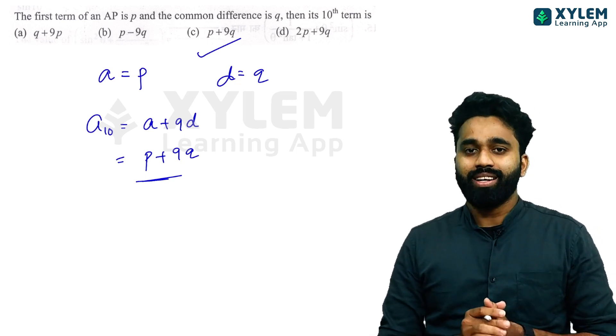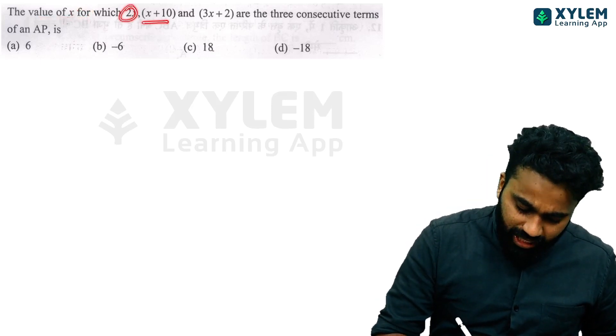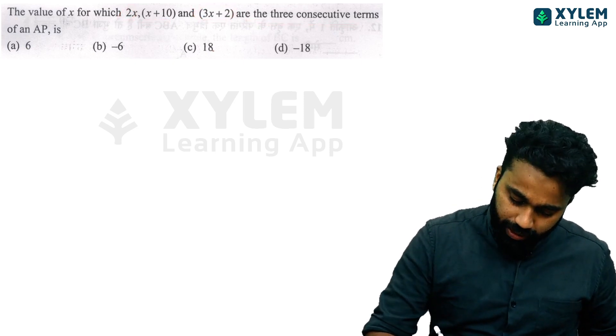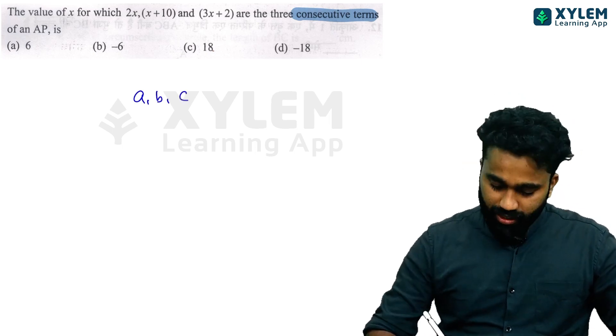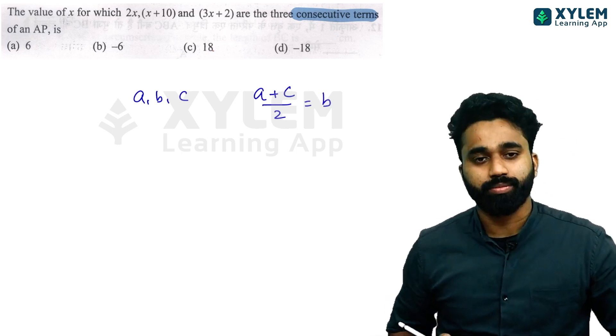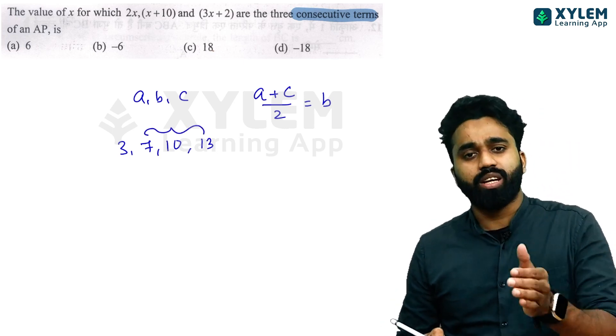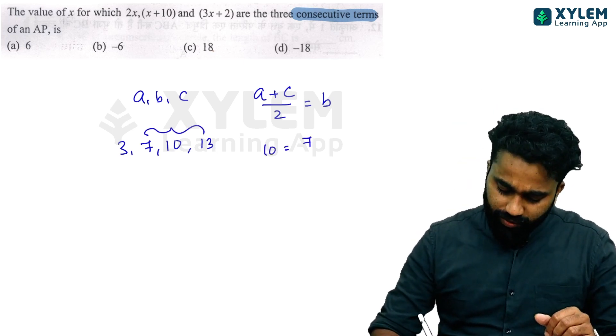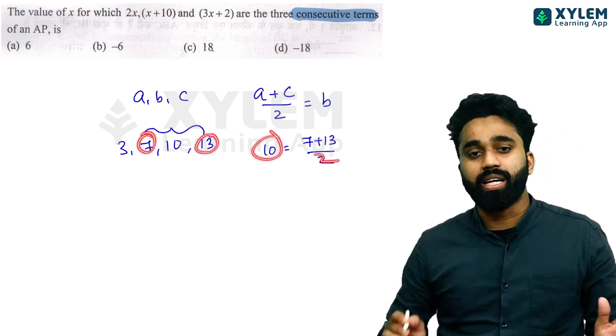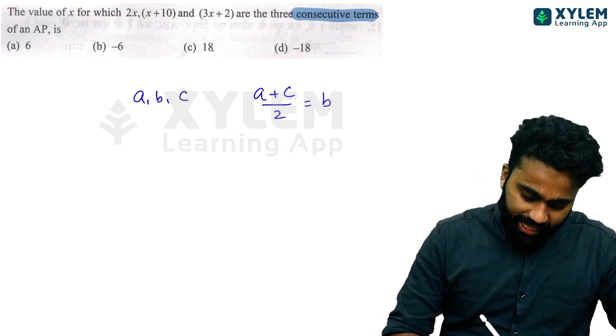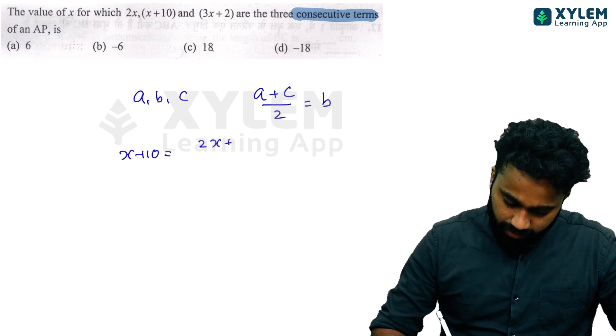This is the value of x for which 2x, x plus 10, and 3x plus 2 are three consecutive terms of an AP. Important one. If three consecutive terms are a, b, c, then definitely we can conclude a plus c divided by 2 is equal to b. The middle term equals x plus 10, which equals first term plus last term divided by 2.